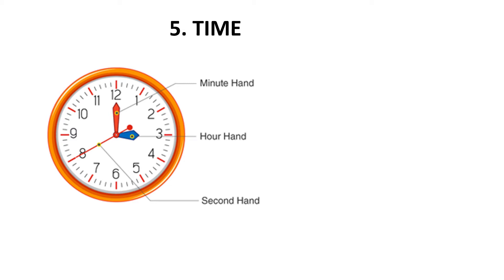A clock has three hands. One thin and fast-moving hand is called the second hand — this moves every second. The next, bigger hand is the minute hand — this shows minutes. The short hand is the hour hand — it shows hours. The face of the clock is marked with numerals 1 to 12, showing 1 to 12 hours of the day.